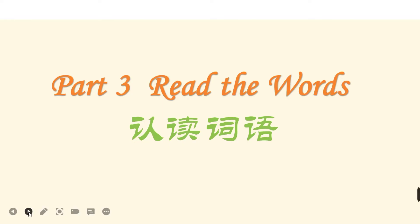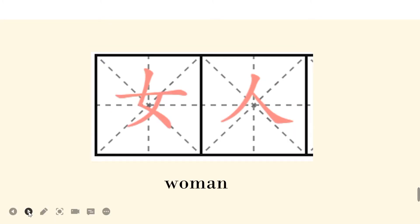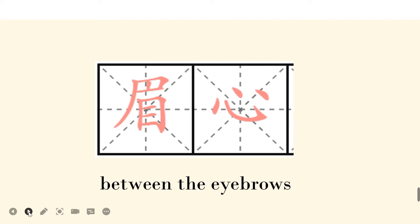Part 3: Let's read the words. Try your best. Rénkǒu, population. Nǚrén, woman. Shǒuxīn, palm. Méixīn, the point between the eyebrows.